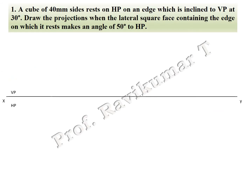The first problem: a cube of 40 mm sides rests on HP on a side which is inclined to VP at 30 degrees. Draw projections when the lateral square face containing the edge on which it rests makes an angle of 50 degrees to HP. Cube means all sides are equal. If you are looking from the top of the object, it looks like a square; if you are looking from the front, it also looks like a square.